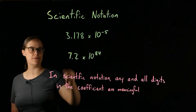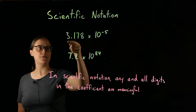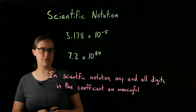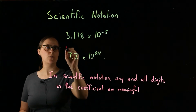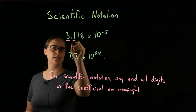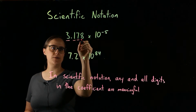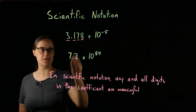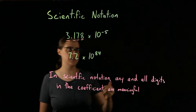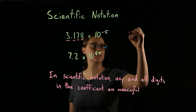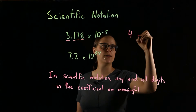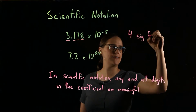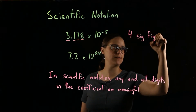So our first value, 3.178 times 10 to the minus 5. We are only looking at the coefficient. We have 4 digits in the coefficient, so this value has 4 significant figures. Significant figures are often abbreviated sig figs.